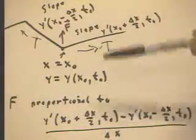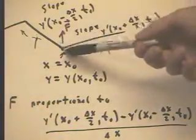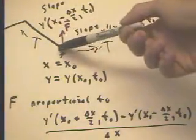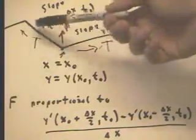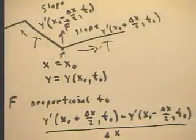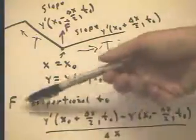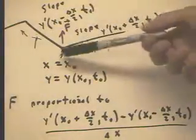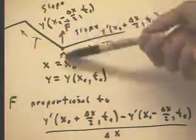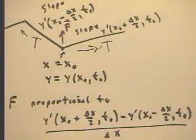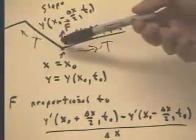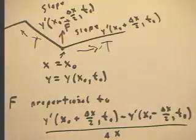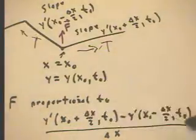In that case, f will be proportional to the difference of those derivatives. This slope is positive, this slope is negative, and both contributions are upward. If we take the positive slope and subtract the negative slope, we get two upward components. So the force f is proportional to the difference of those two derivatives — this positive derivative minus this negative derivative gives us two positive components. In any situation you can draw, it makes sense to subtract the one to the left from the one to the right to get the direction of the force; sometimes it'll be negative, sometimes positive.